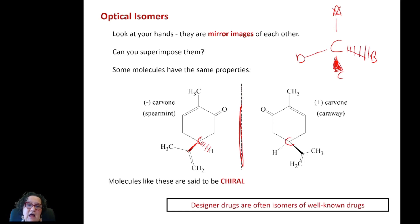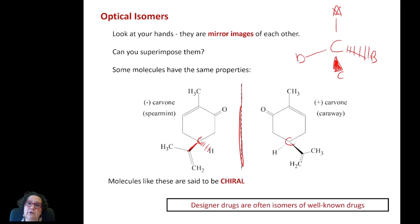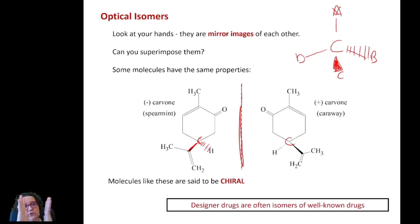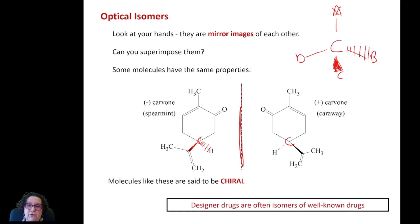Molecules that have at least one carbon with single bonds attached to four different substituents will behave this way: when you try to superimpose them with their mirror images, you won't be able to do it. It's a similar relationship to your hands — they are mirror images of each other, but because of their symmetry, when you try to rotate them they don't superimpose. We call those compounds chiral.